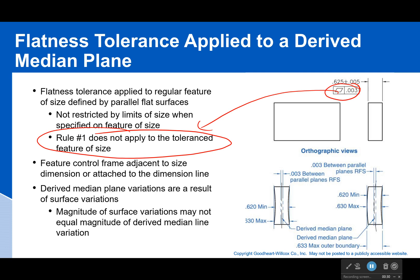The second thing to remember is that it controls the derived median plane — that's the collection of midpoints. So if you have something that's perfectly symmetrical on both sides, that surface can be as wonky as it wants to be, as long as it's within the size tolerance and the same amount of wonkiness is on both sides. Because the derived median plane would be the same.